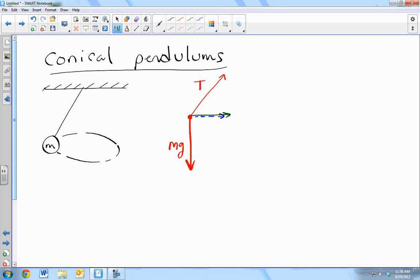This component of tension in the x-direction causes centripetal acceleration. What does the rest of the tension do? It counteracts gravity. It supports the object. It prevents it from... It prevents the thing from falling downwards.